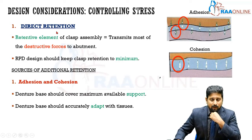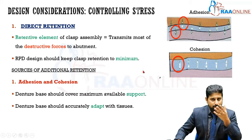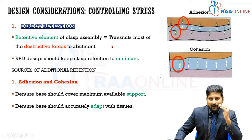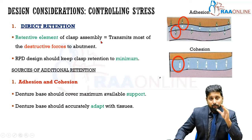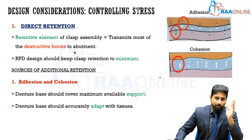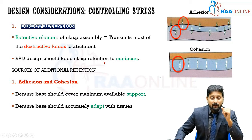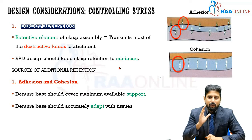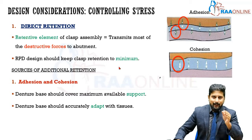Let's take direct retention. We all know that retention for a removable partial denture comes from your direct retainer, which is part of your clasp assembly. But we also know that it is this retentive element of the clasp assembly that transmits most of the destructive forces to the abutment. So even though they are retaining the removable partial denture, they are also damaging the abutment in many situations, especially in Kennedy's Class I and Class II situations. Hence, RPD design should keep clasp retention to a minimum — you do not have to completely depend upon your retentive element for all the retention.